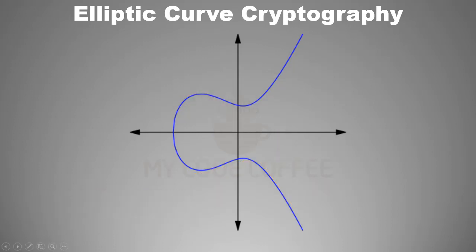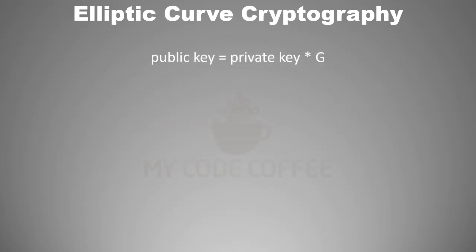Now that you know what elliptic curve multiplication is, let us understand how the public key is generated. The public key is generated by multiplying the private key and a point called the generator point on the elliptic curve. If we refer to the public key as P and the private key as k, then P equals k times G on the SECP256k1 elliptic curve. Here G is the generator point, which is a fixed point on the elliptic curve.